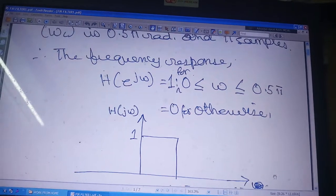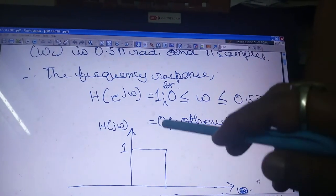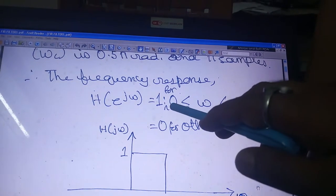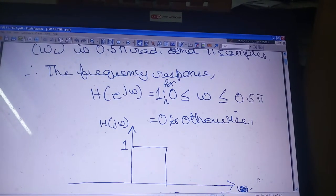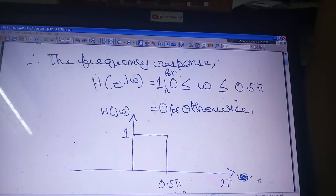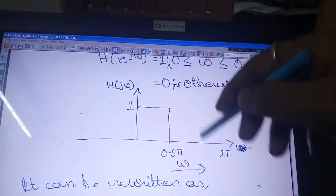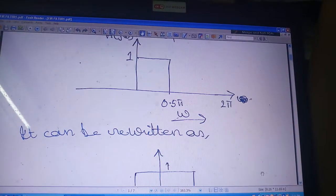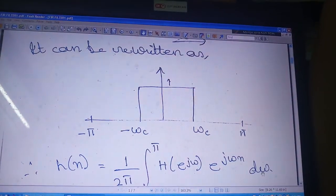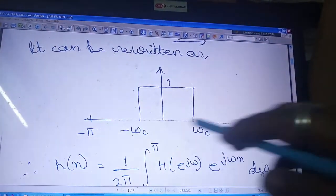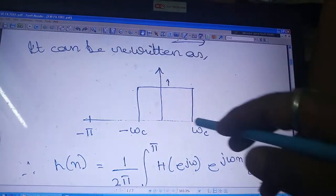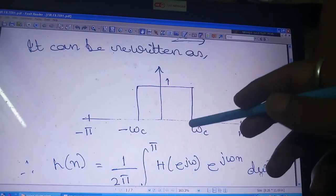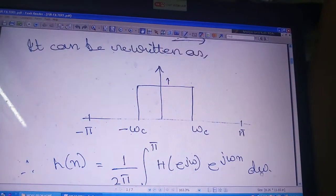The frequency response can be given as: H(ω) = 1 for ω greater than or equal to 0 and less than or equal to 0.5, and 0 otherwise. If I plot it, it looks like this, up to 2π. I can rewrite it by shifting from minus π to π, taking a mirror image of the frequency response.